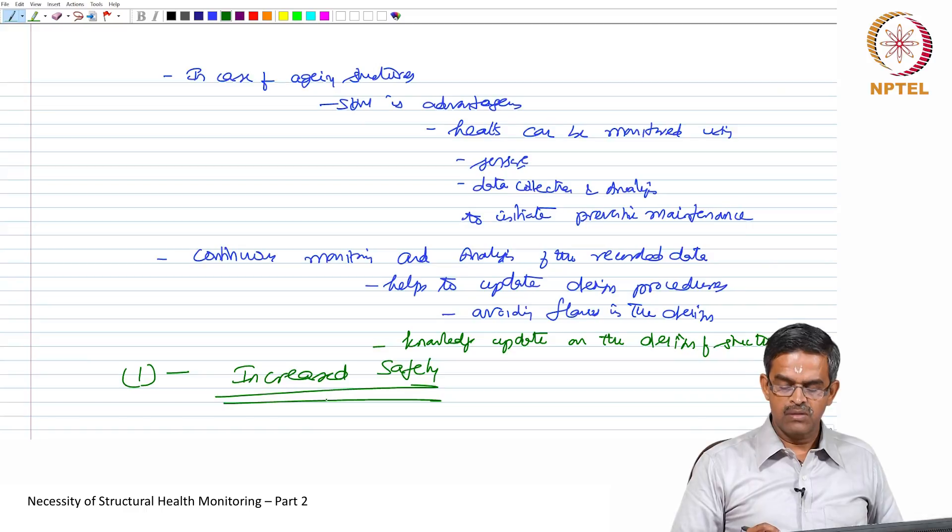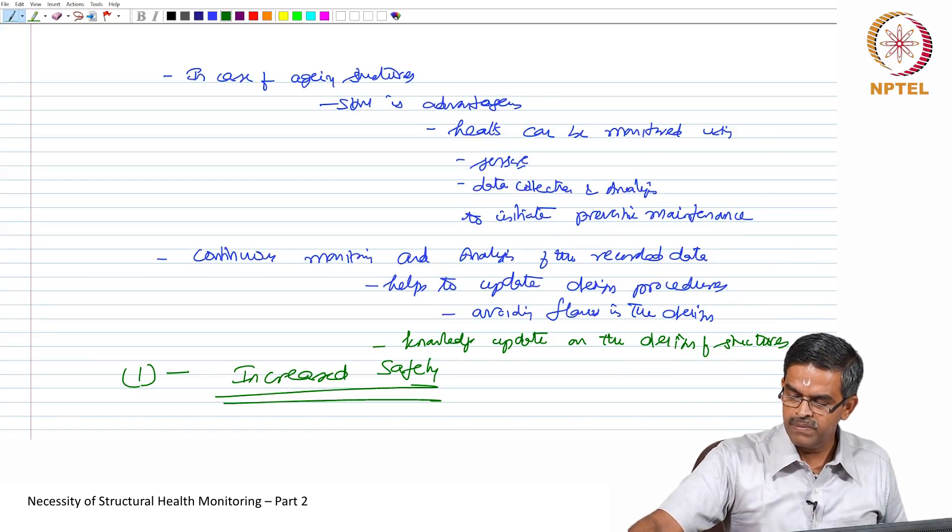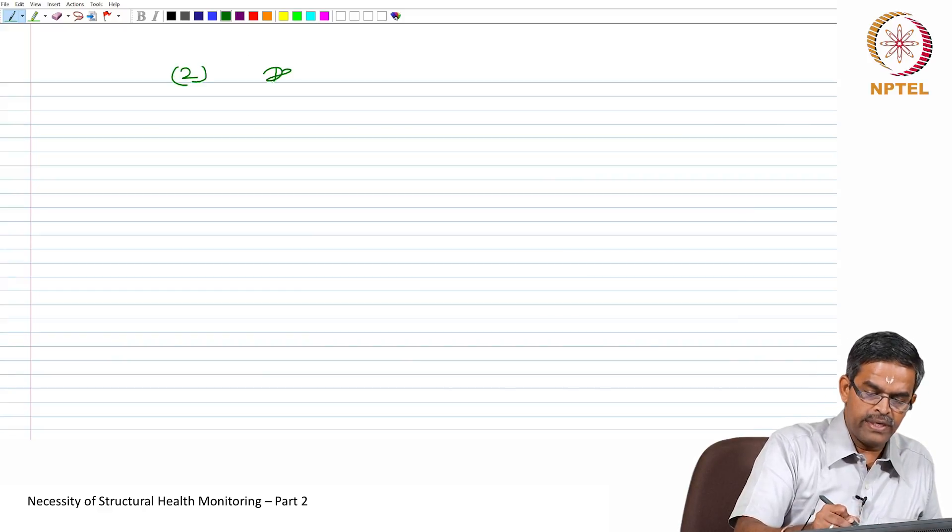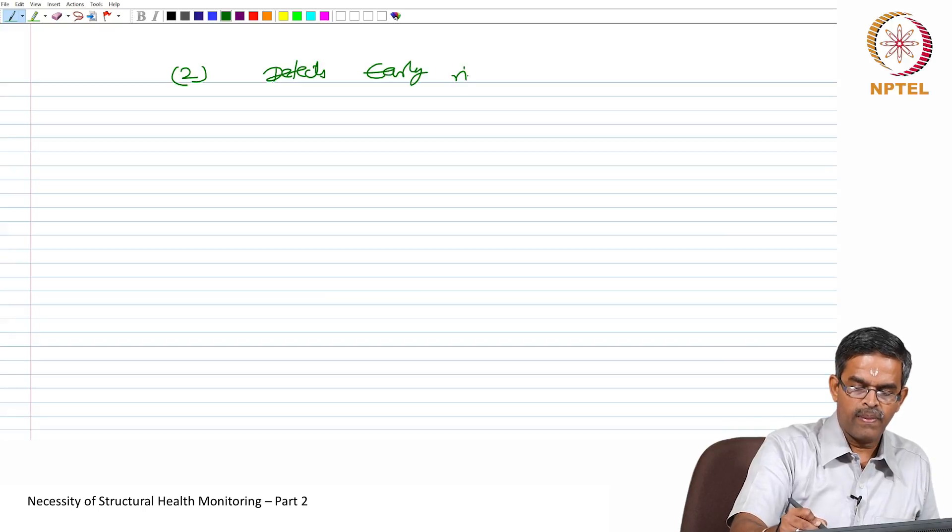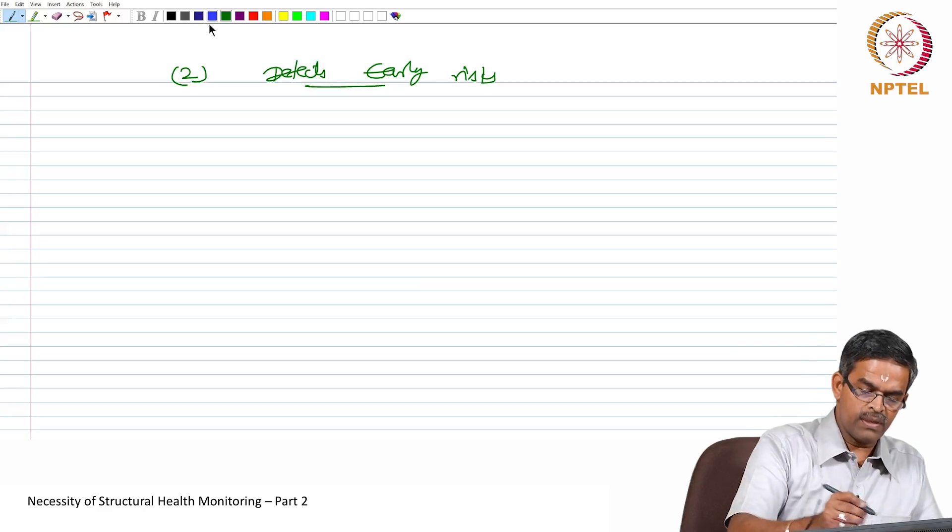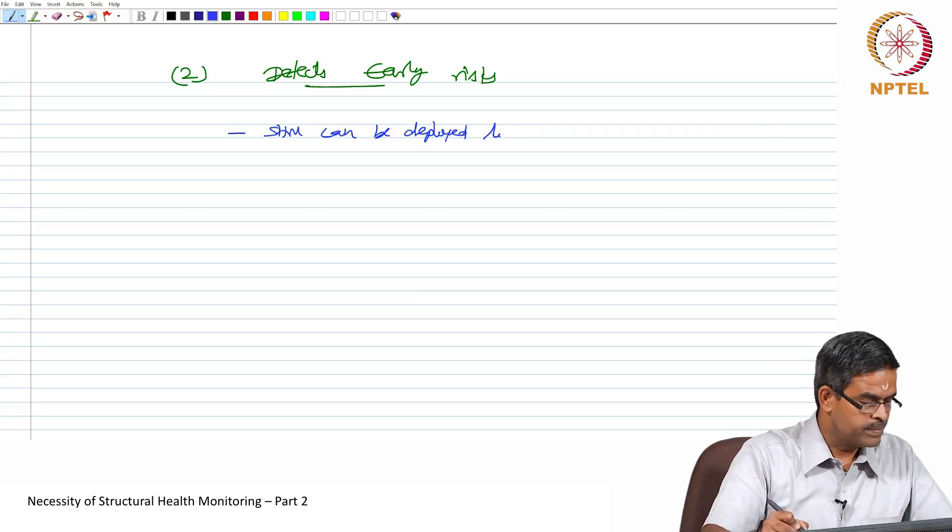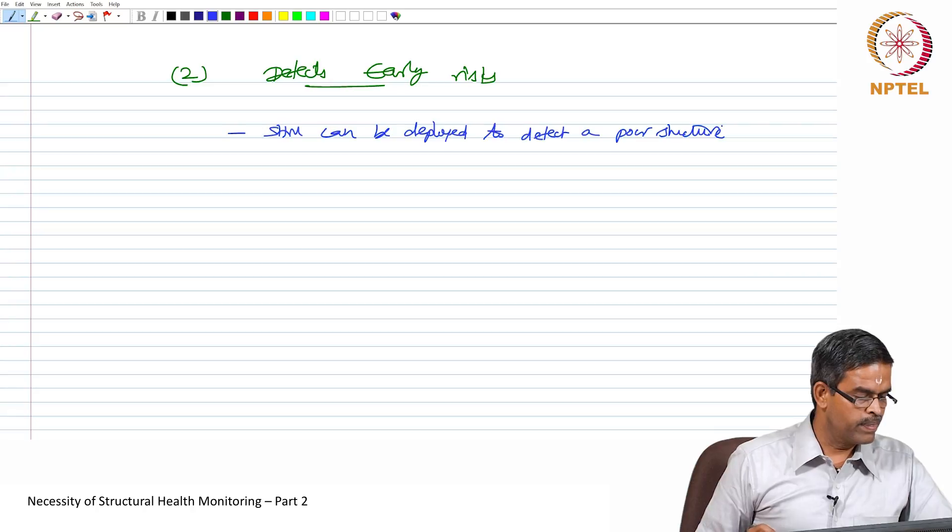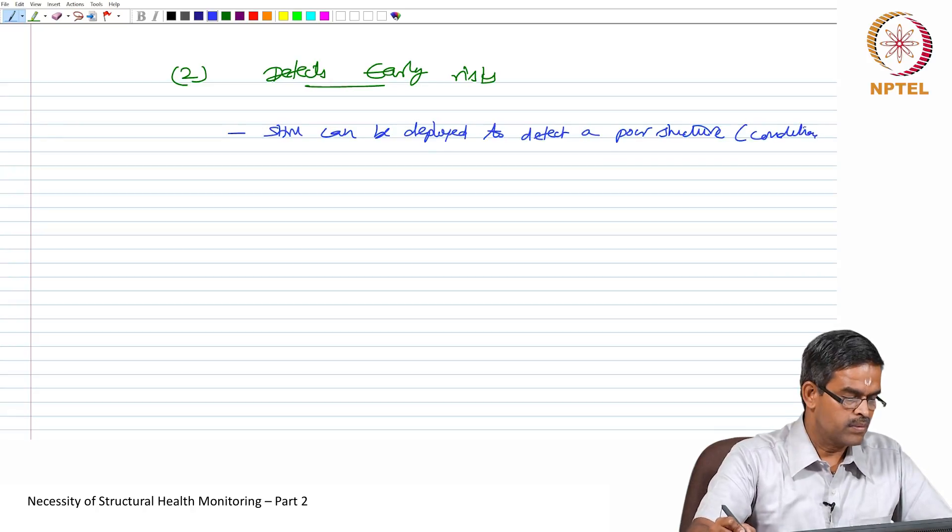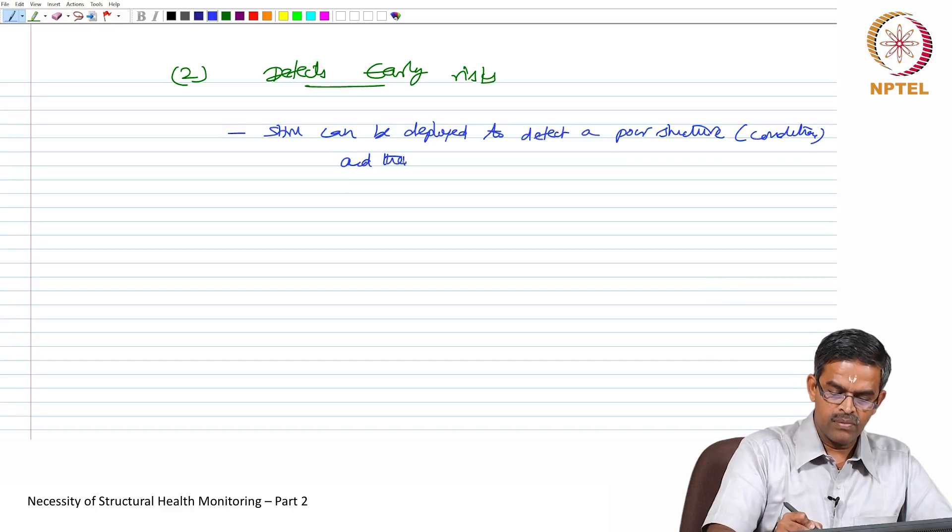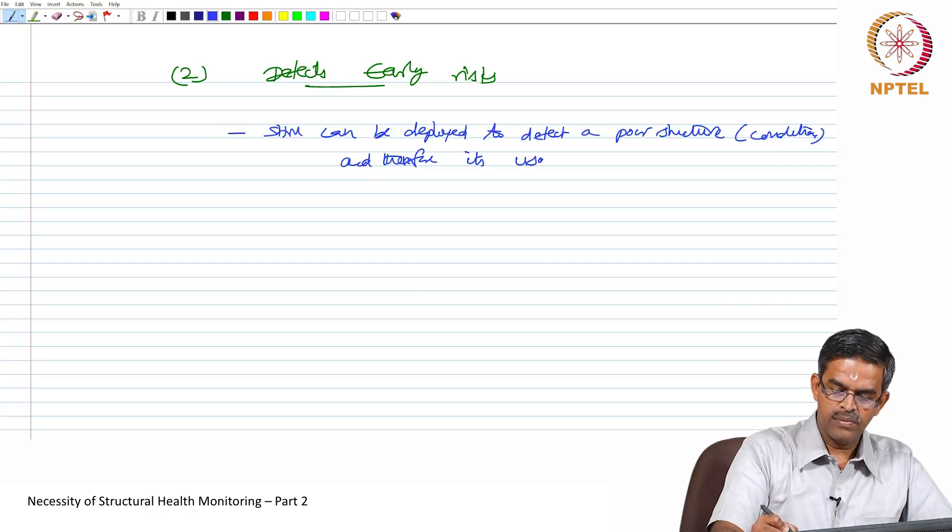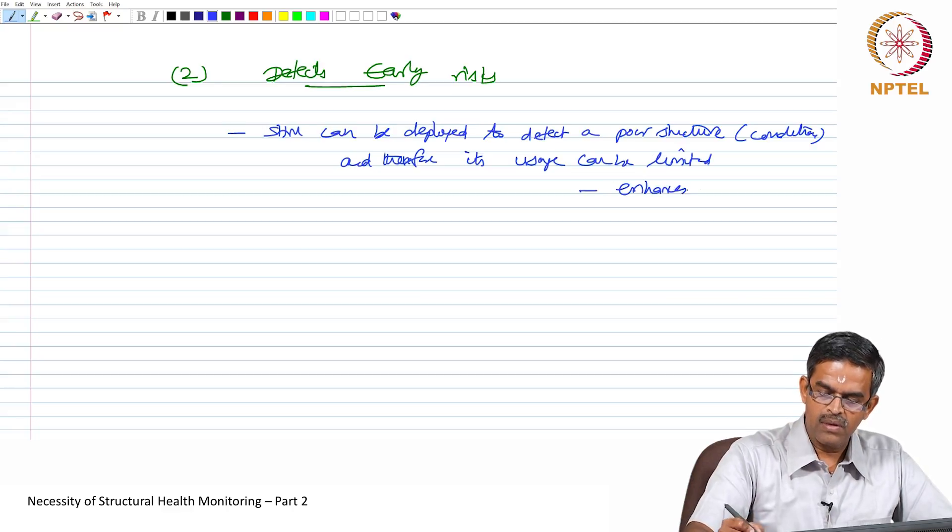The second advantage is it detects early risk. For example, SHM can be deployed, SHM tools can be deployed to detect a poor structure or its condition, and therefore its usage can be limited. This enhances public safety.